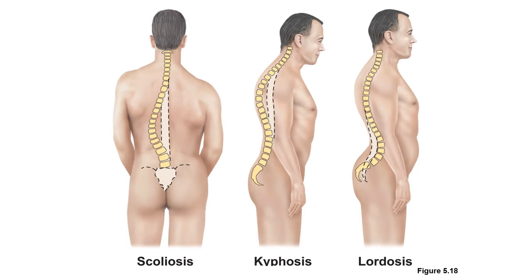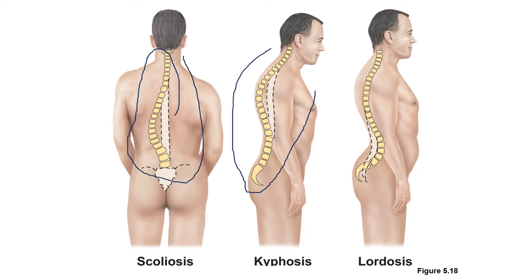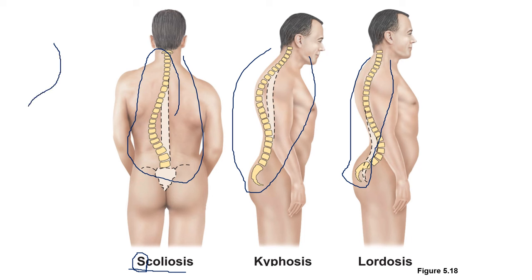There are three abnormal conditions of the vertebrae. Scoliosis — the letter S — forms an abnormal lateral curve. Kyphosis — K for 'kubâ' or hunchback — is an abnormal posterior curve. Lordosis — L for 'liad' — is an abnormal anterior curve.